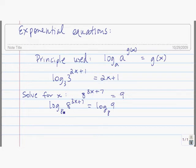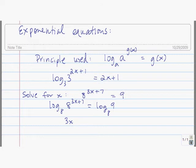That's the base you're going to use for the log. The next thing we're going to do is simplify the left-hand side. Log base 8 of 8 to the 3x plus 7 is just 3x plus 7, so 3x plus 7 equals log base 8 of 9.